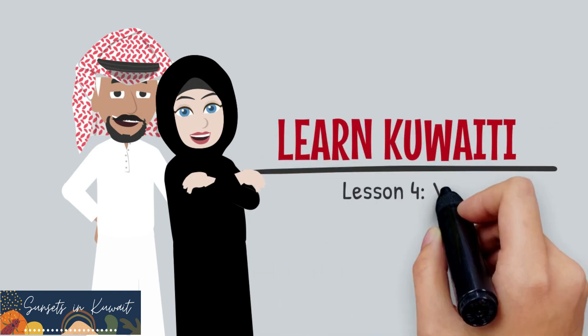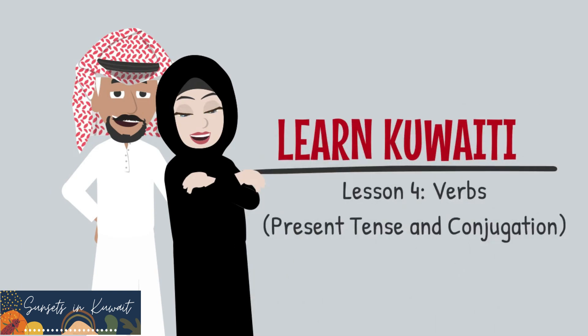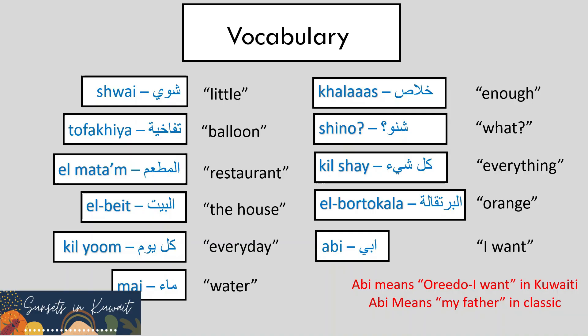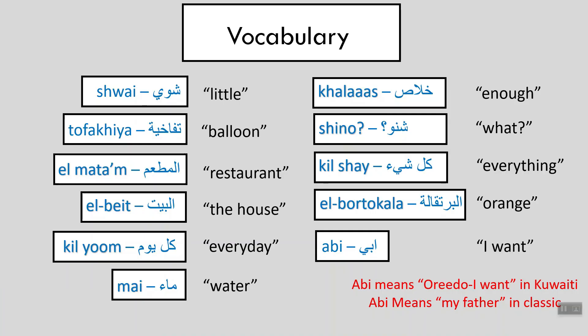Welcome back to Sunsets in Kuwait, our series on learning Kuwaiti. This is the fourth lesson: verbs, present tense and conjugation. This is the vocabulary we'll find throughout the lesson. Let's start.